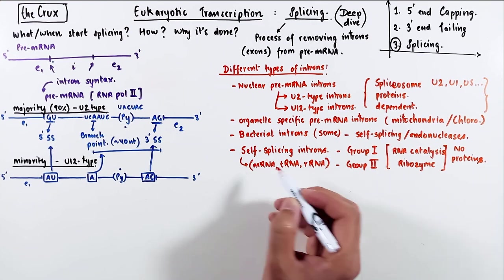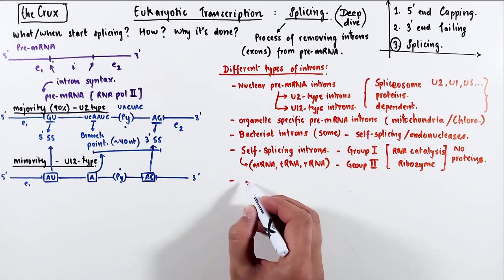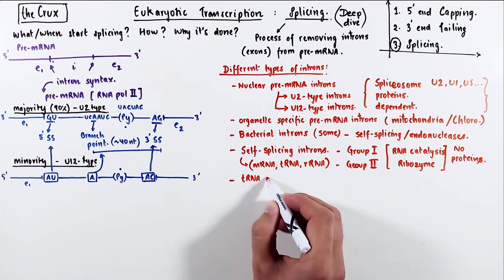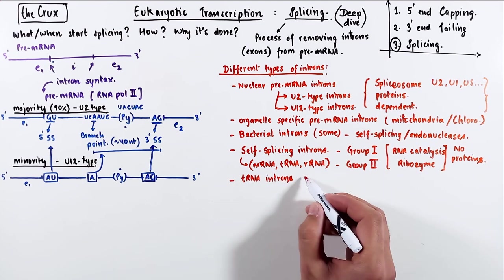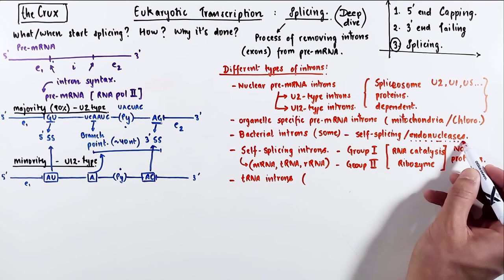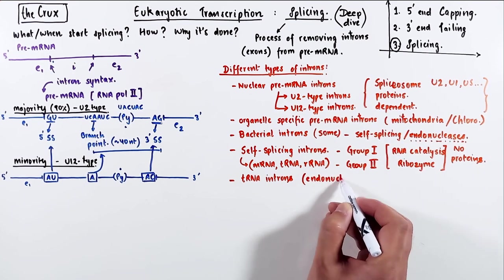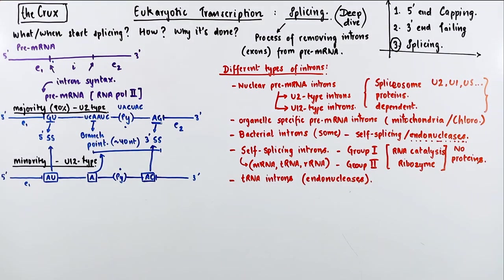And these are found in a few mRNAs, but a lot of tRNAs and ribosomal RNAs. In addition, we have a class of tRNA introns that are dependent on endonucleases, much like the bacterial introns.